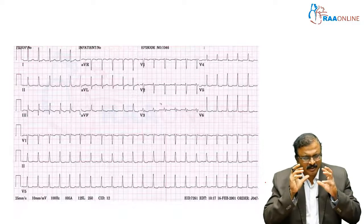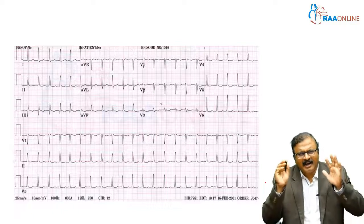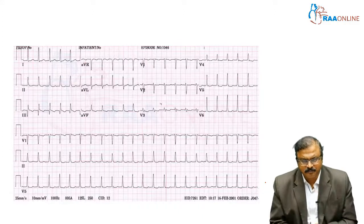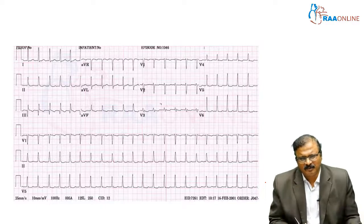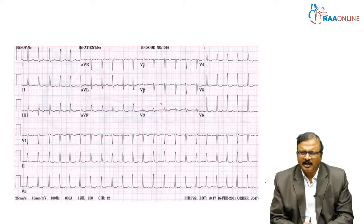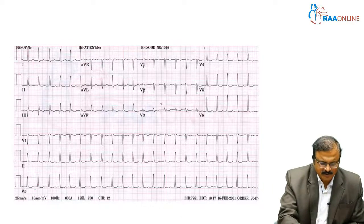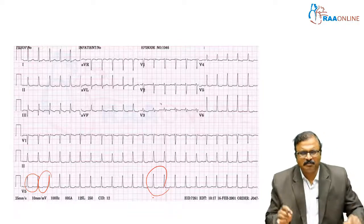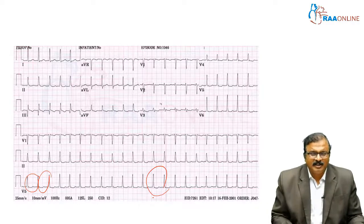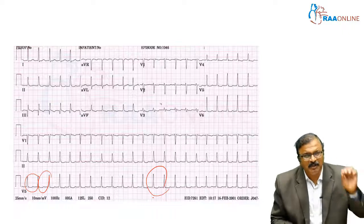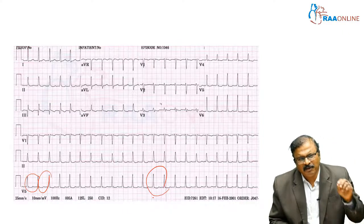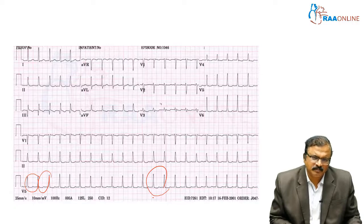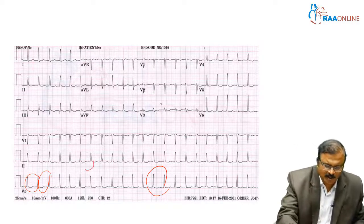Observe this ECG carefully — there is definitely a tachycardia that needs careful observation. The first point is whether it is a regular or irregular tachycardia. If you broadly assess, it seems to be a regular tachycardia, though you can see some variation. Next: whether P waves are present. There are no definite P waves.